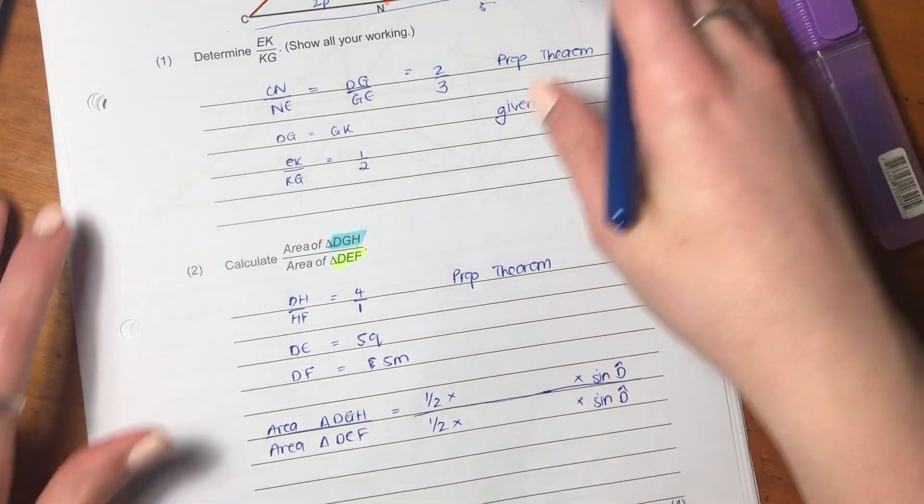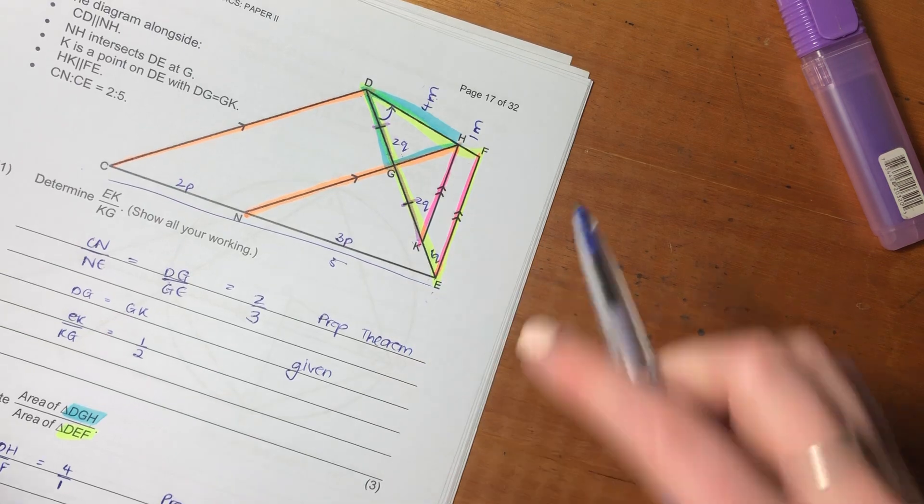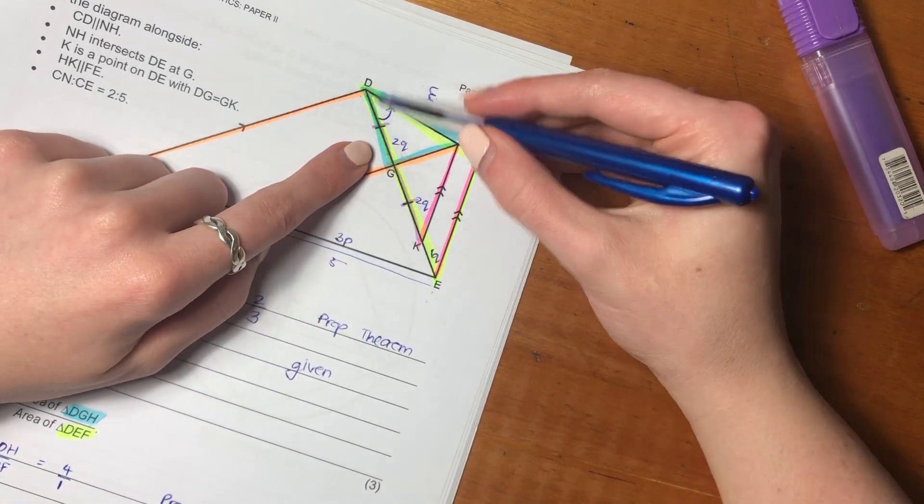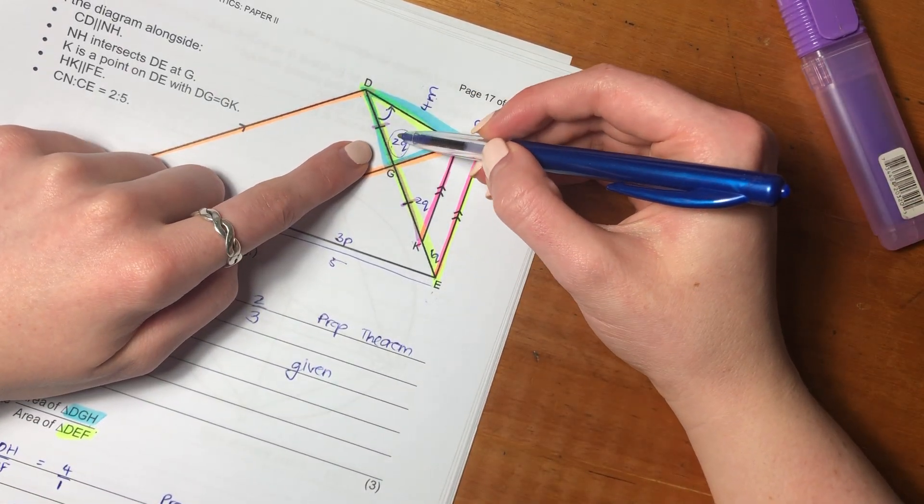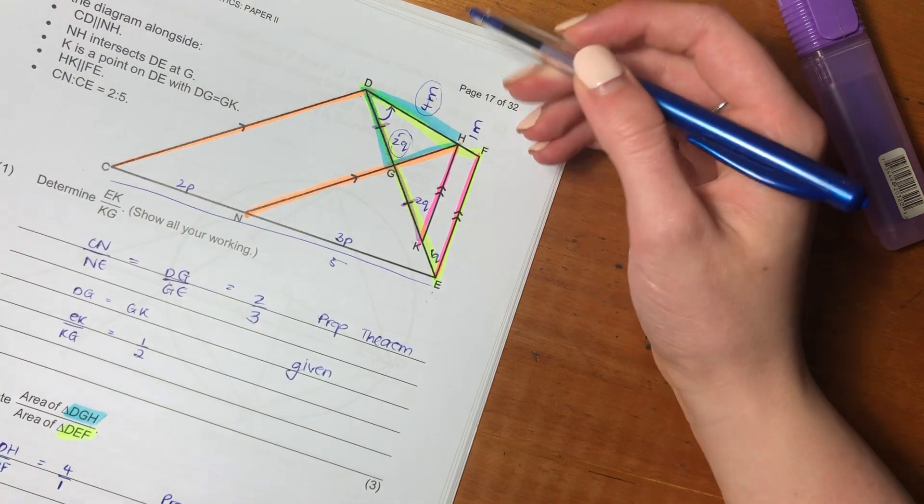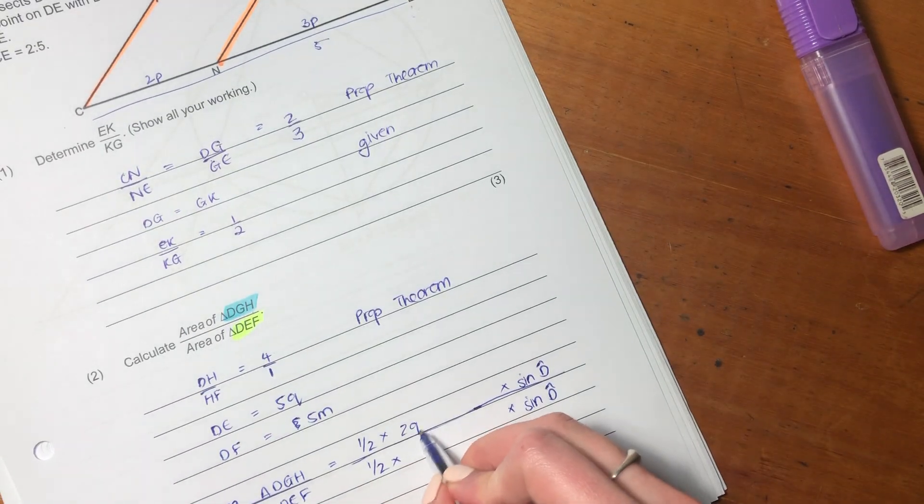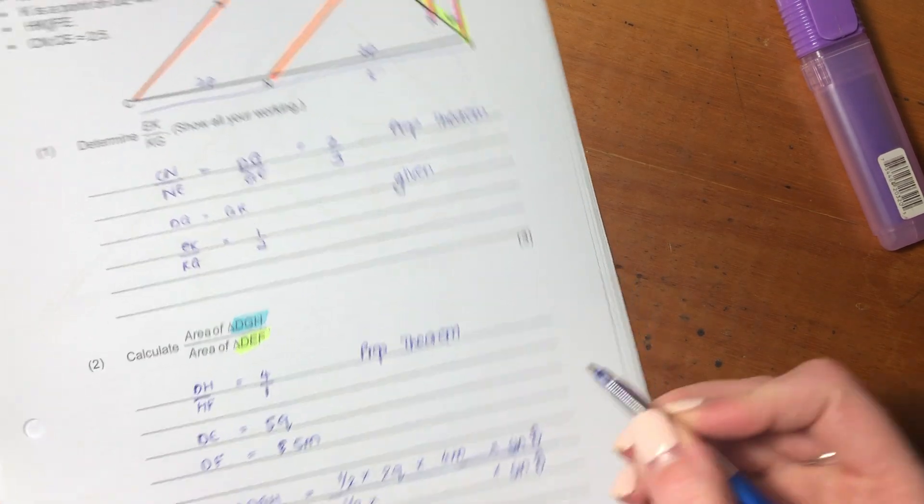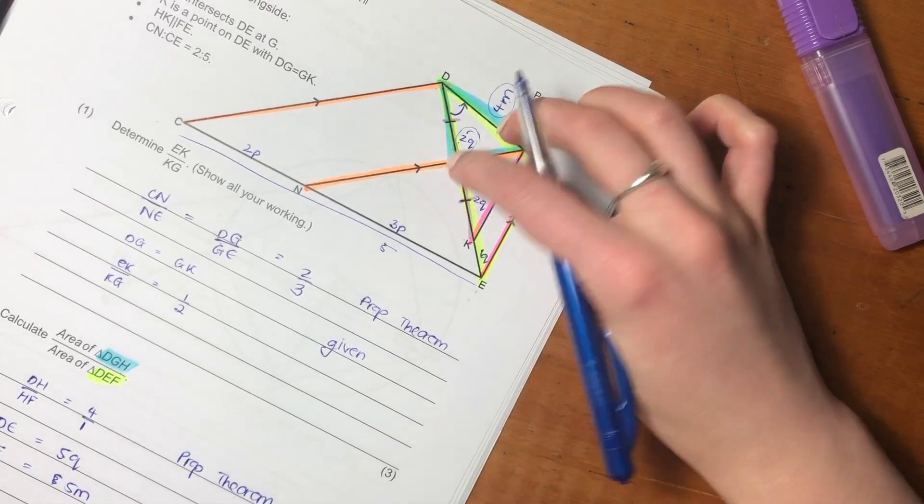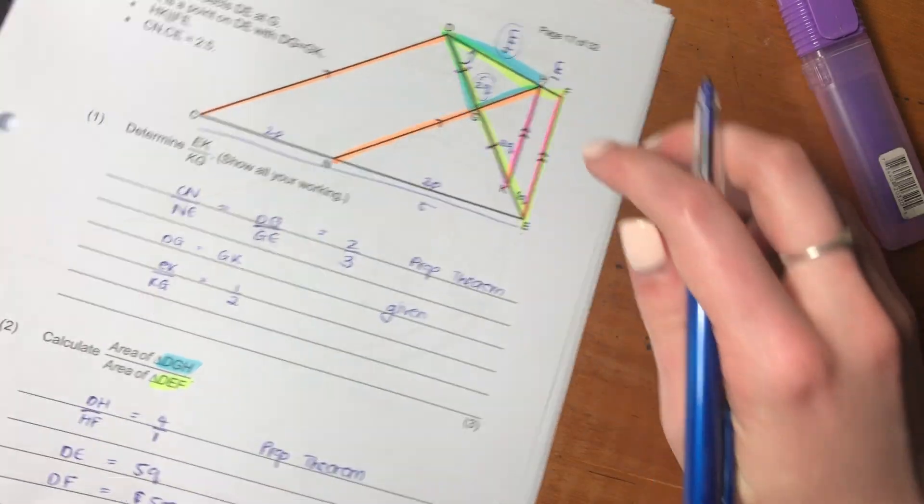So in our top triangle, our A is going to be 2Q, and our B is going to be 4M. Because remember, you always do the two sides and the angles in between.